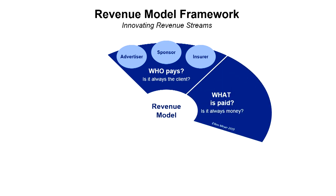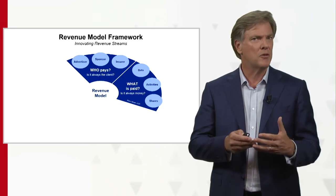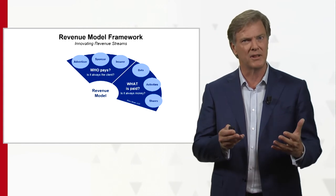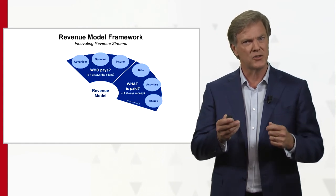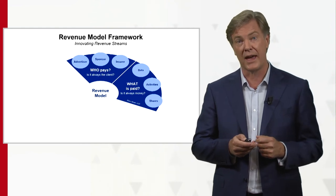Let's go to the second category — the whole category of what is paid. Is it always money that's being paid? Very often it's much more interesting to get paid in data, or maybe to get paid by having the customer perform certain activities, or maybe we want to get paid in terms of shares. Again, these are only three examples; there are more possibilities. But it is good to think through whether money is always the most valuable thing to ask for.